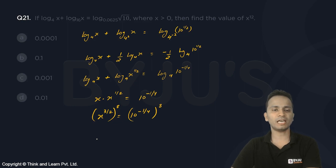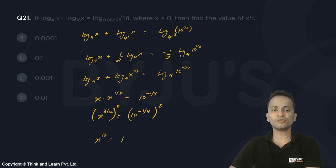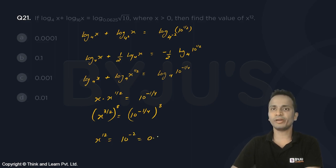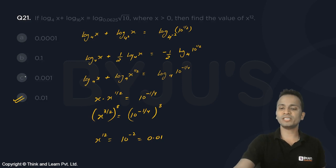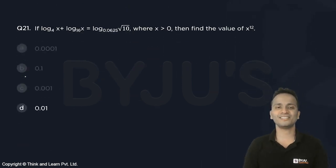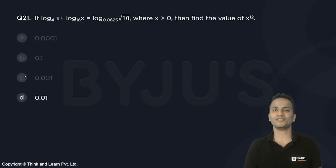On the left-hand side we get x raised to the power 12, and that is equal to 10 raised to the power minus 2, which is 0.01. So the correct answer to this question is option B: 0.01.